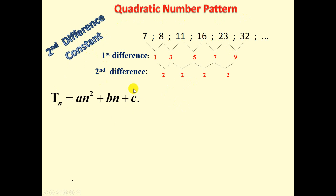The general equation of a quadratic number pattern is Tn = An² + Bn + C. So we need to find A, B, and C.